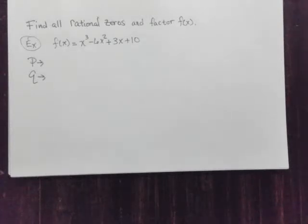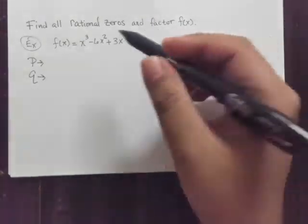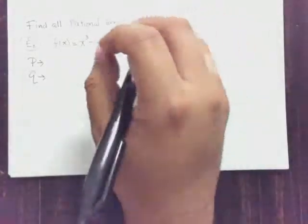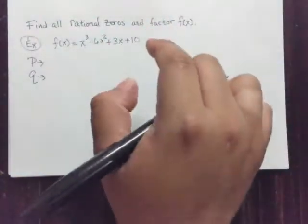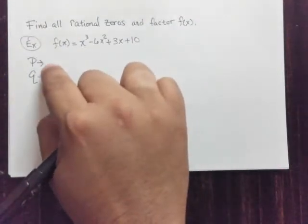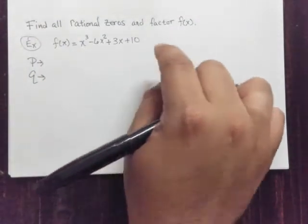In the example here, we are asked to find all the rational zeros and factor. If you're not familiar with the rational roots theorem, I suggest you take a look at one of my previous videos about the rational roots theorem or rational zero theorem. We're going to assume that you kind of know this already, but I'll try to put the link in the description.